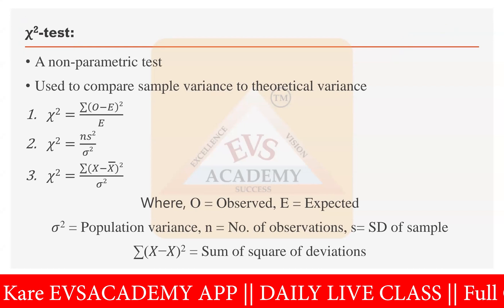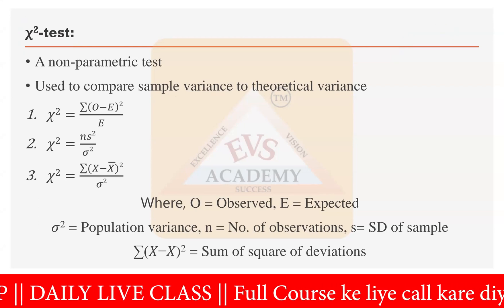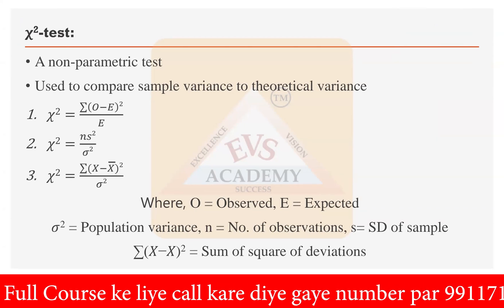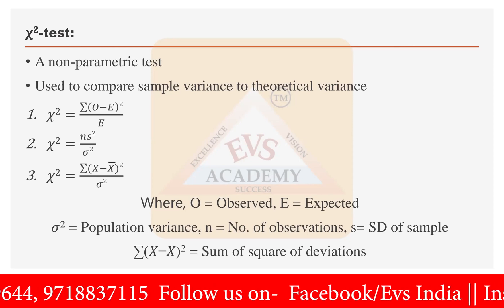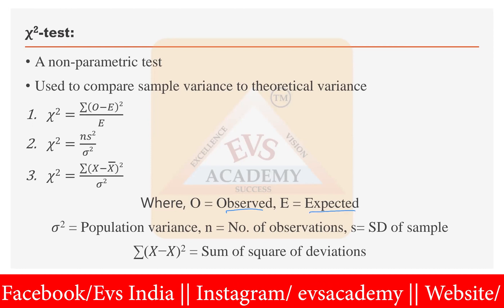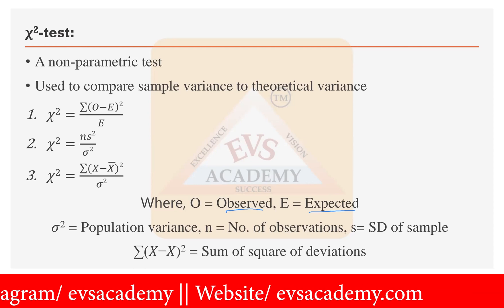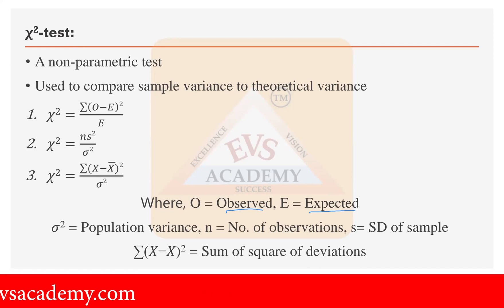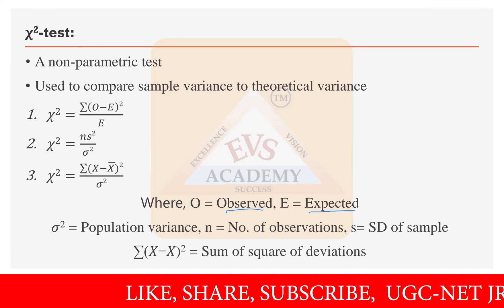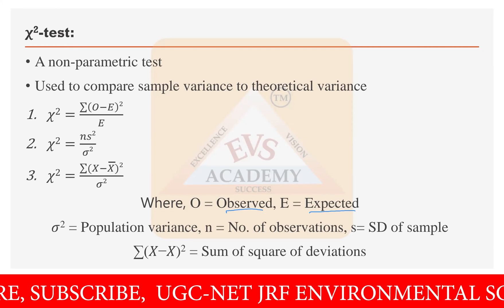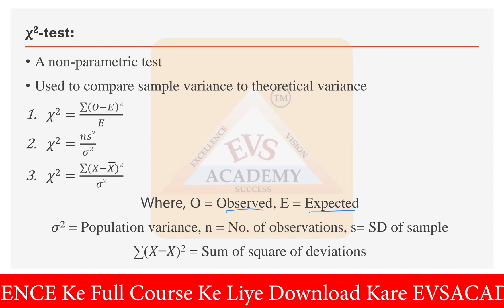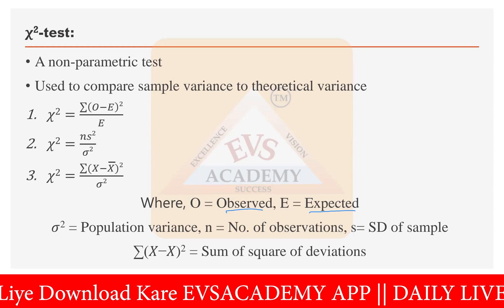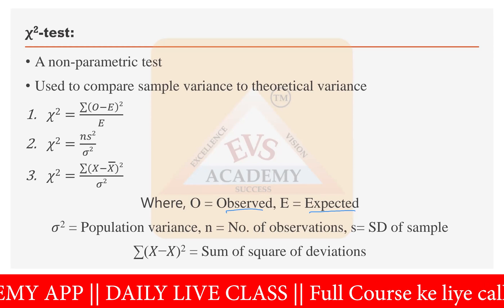The chi-square test has three different applications and three different formulas, similar to what we saw in the t-test. The very first formula is: chi-square equals the summation of (O minus E) whole square divided by E. Here O is the observed value and E is the expected value. For example, suppose you are going fishing — you might expect to catch 100 fish in a day based on previous experience. That expectation is your E value.